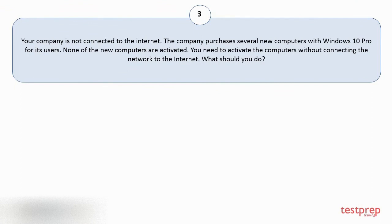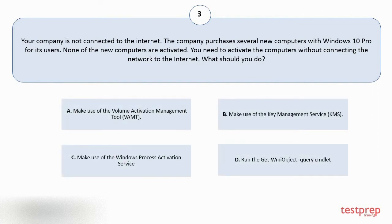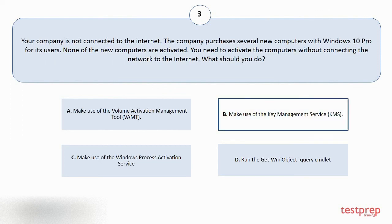Question number three. Your company is not connected to the internet. The company purchases several new computers with Windows 10 Pro for its users. None of the new computers are activated. You need to activate the computers without connecting the network to the internet. What should you do? Your options are: A. Make use of the Volume Activation Management Tool. B. Make use of the Key Management Service. C. Make use of the Windows Process Activation Service. D. Run the GetMeObject query. The correct answer is option B.